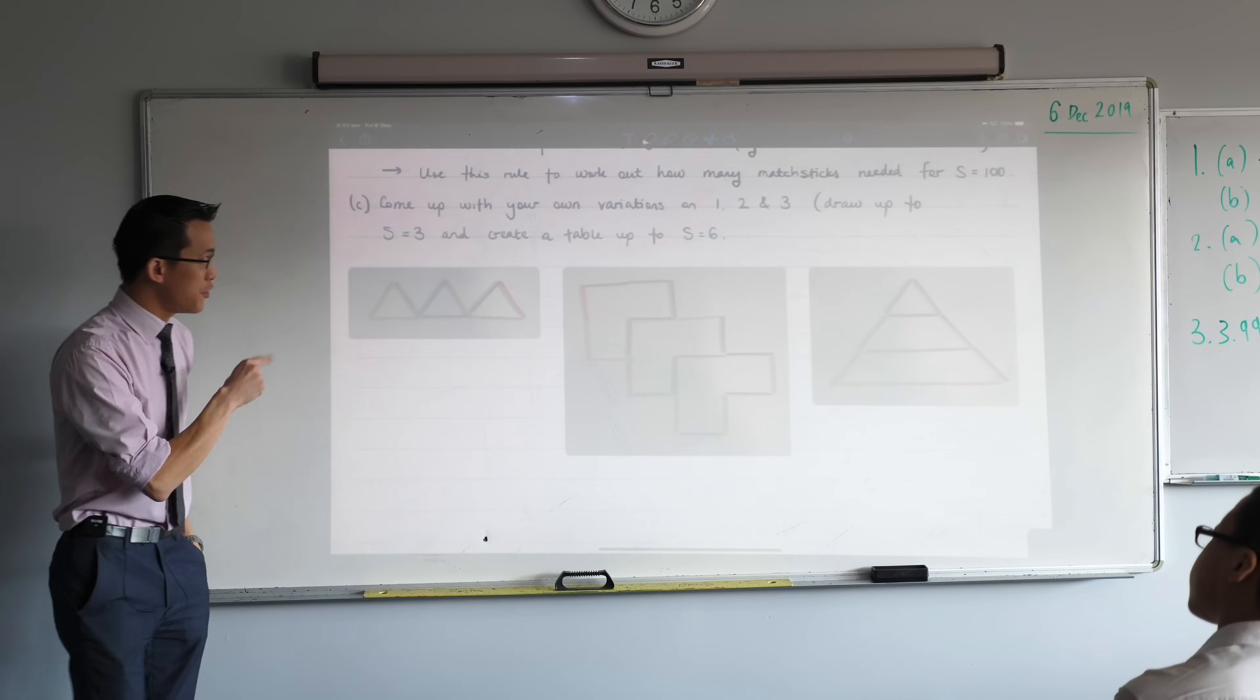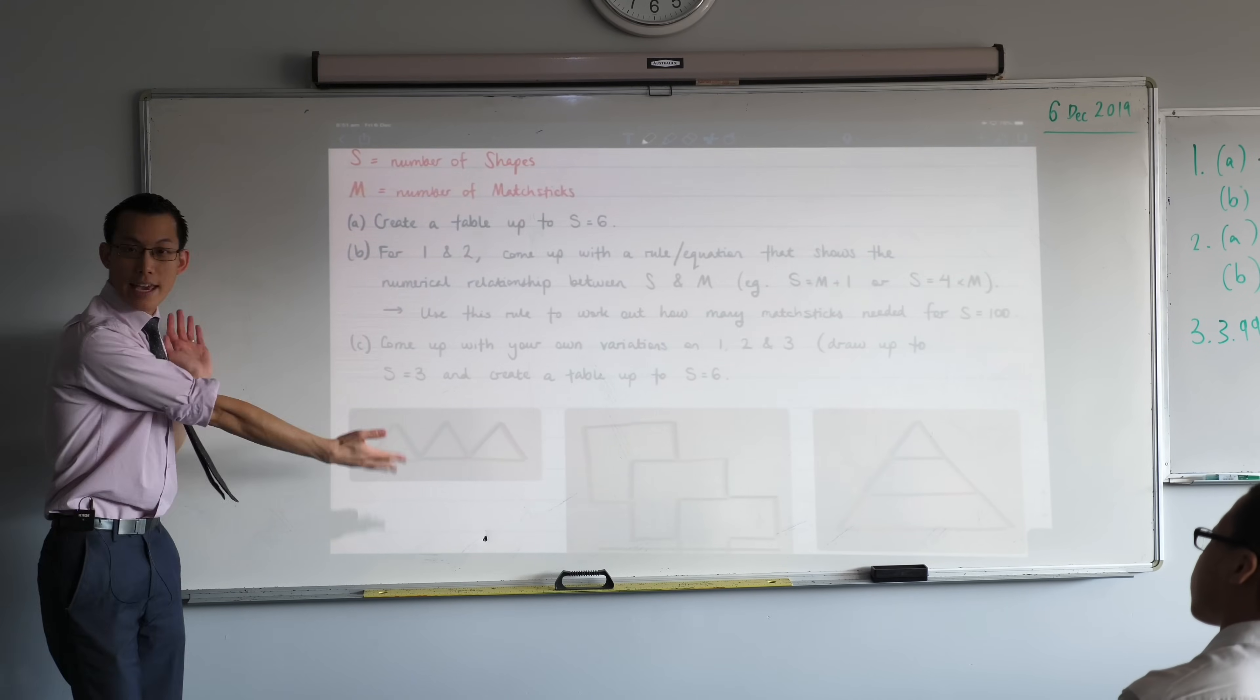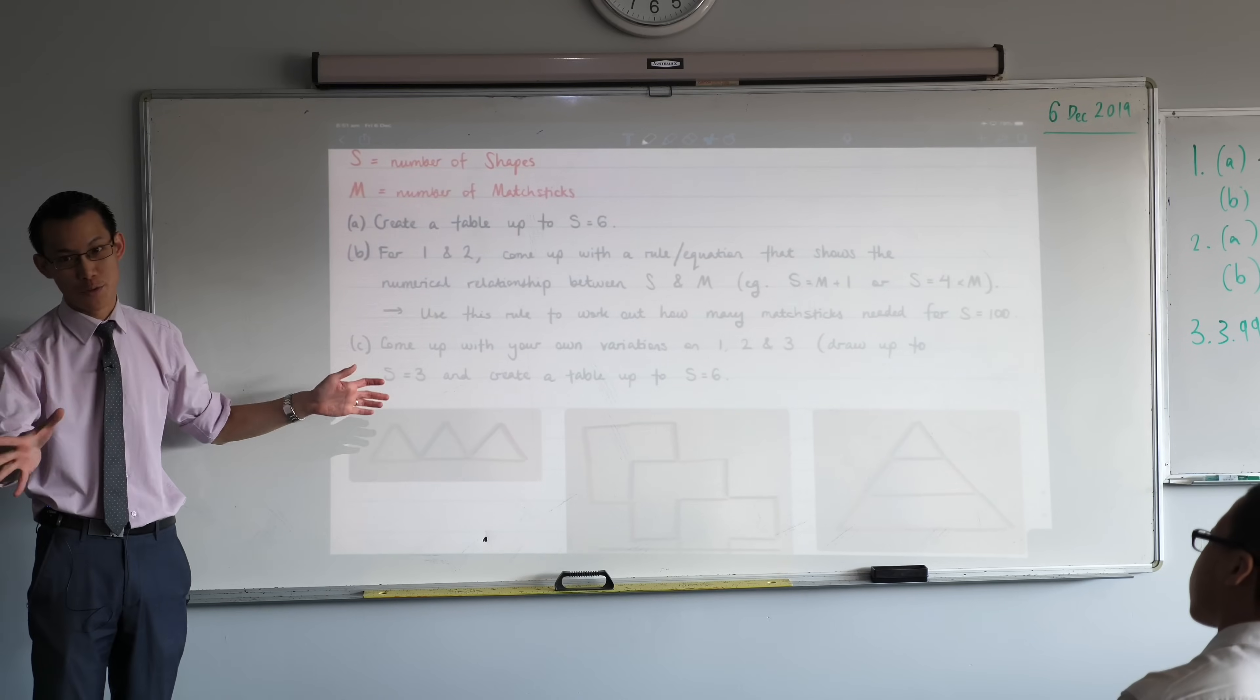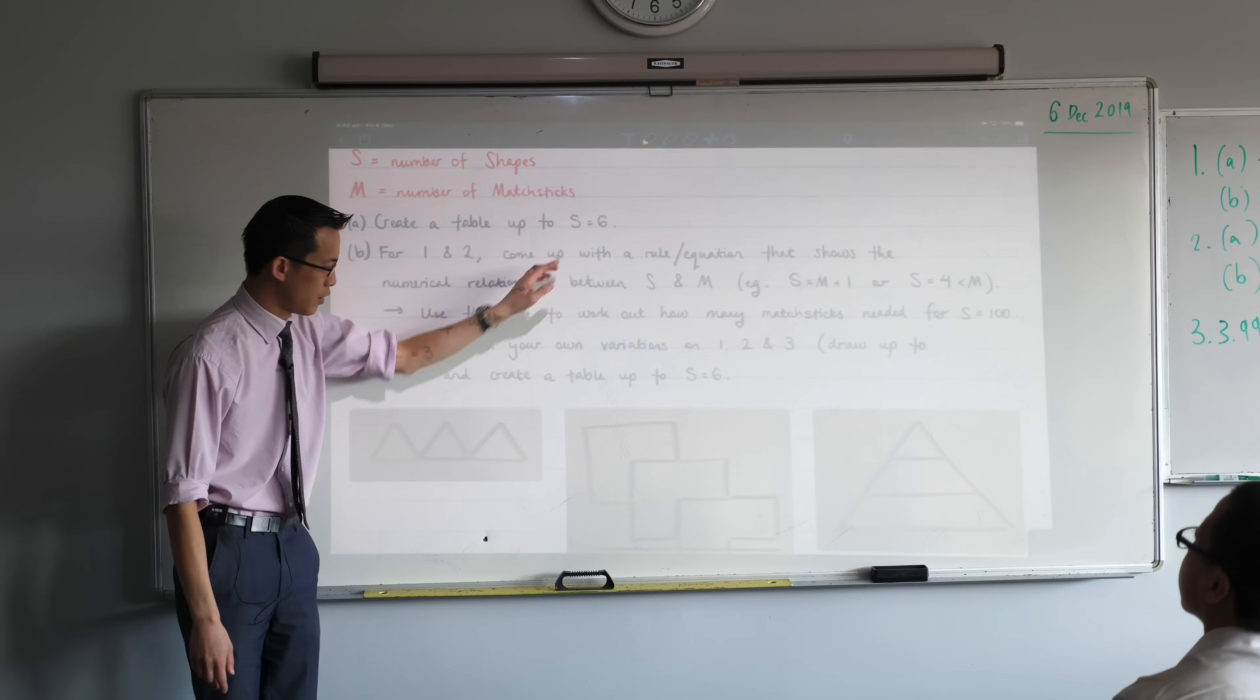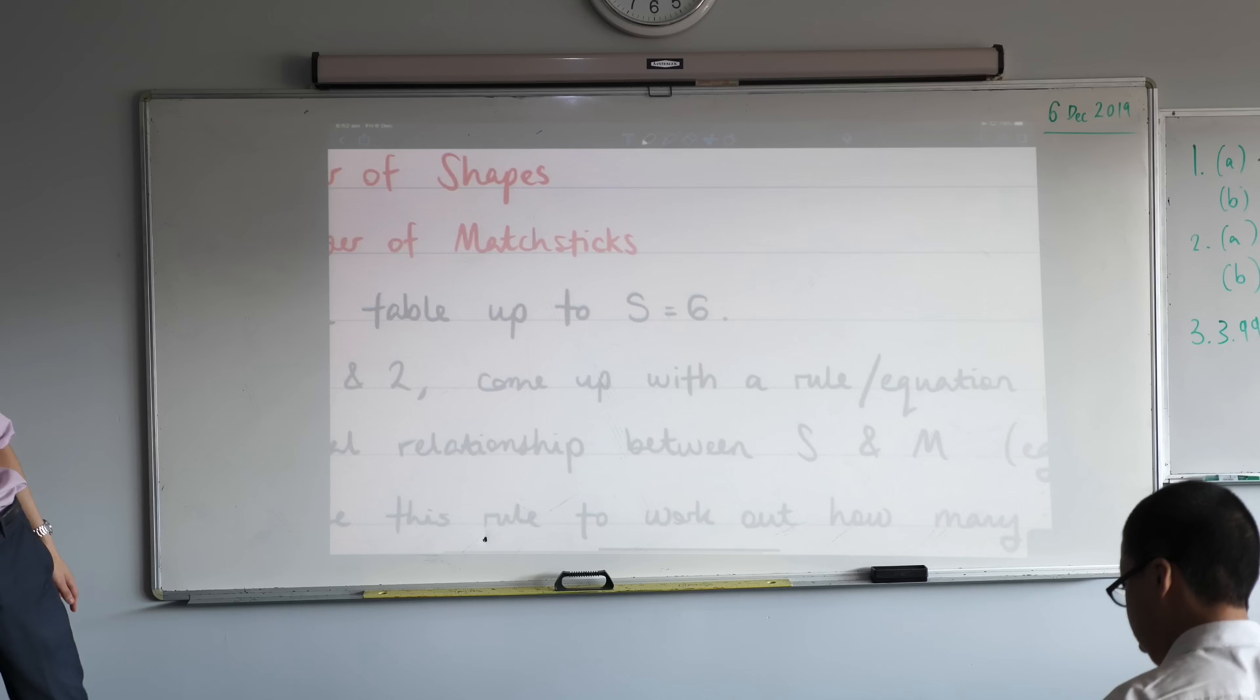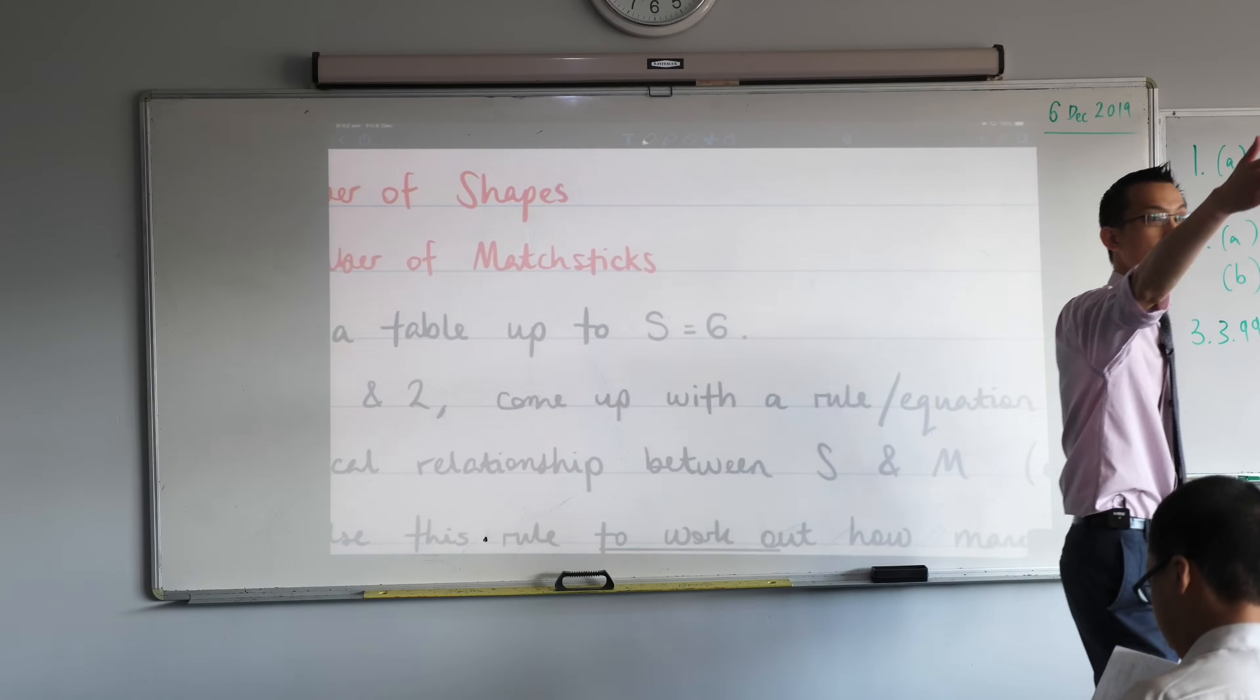Now, do you remember? In fact, I've got it right here. When I gave you these three different patterns, I asked you to do a bunch of things with them. I don't expect you to remember all those things, so that's why I've got this here. I asked you to create a table for each of these up to S equals six. What does that mean? When you see S equals six, what does that indicate for these particular things we're looking at?